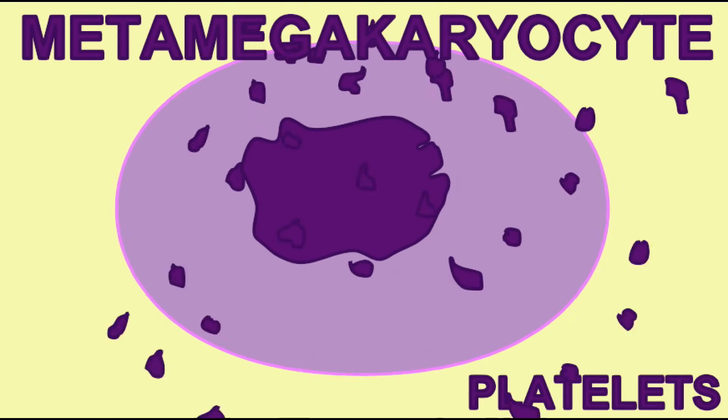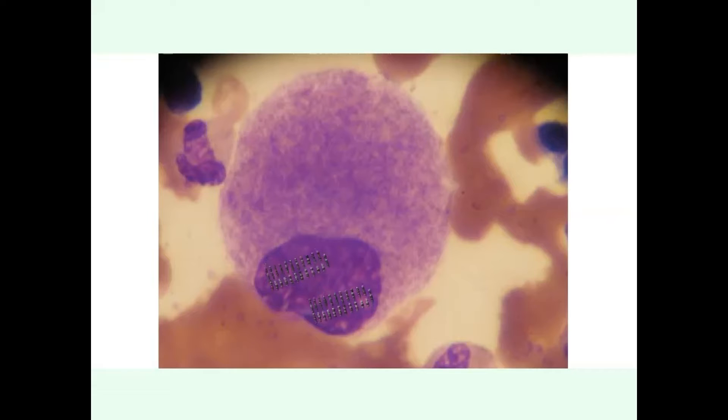The cells of the bone marrow which produce platelets, known as megakaryocytes, can be diploid with two copies of each chromosome.